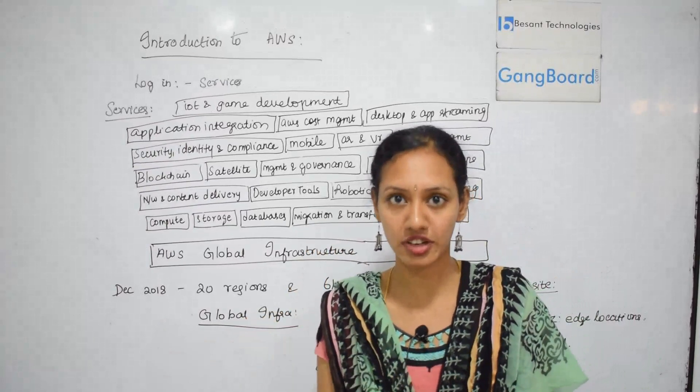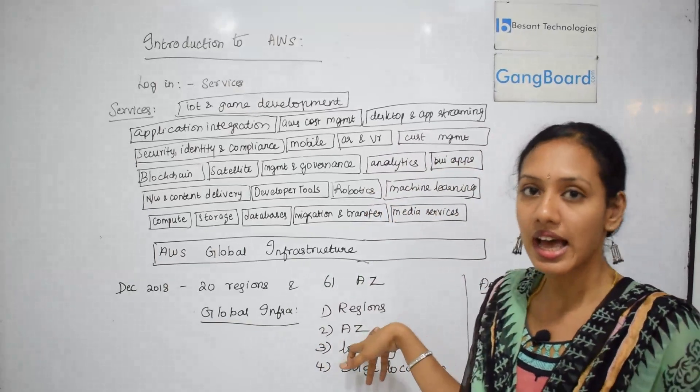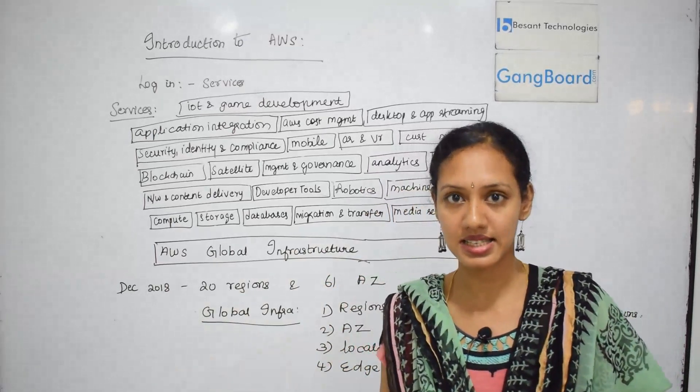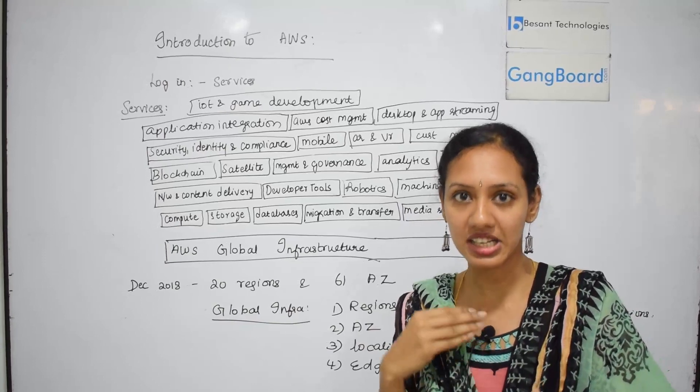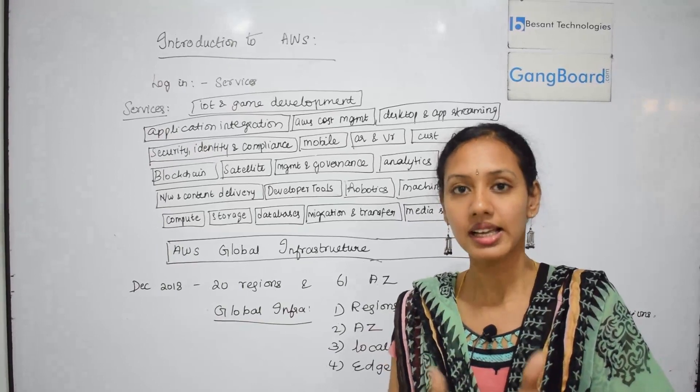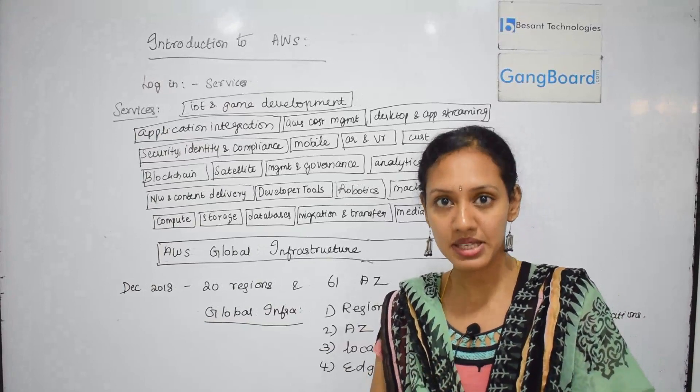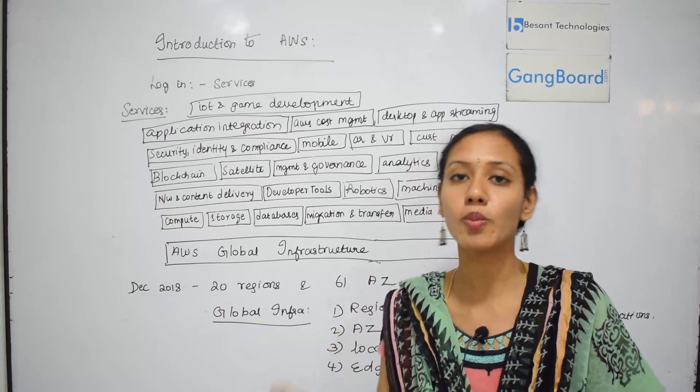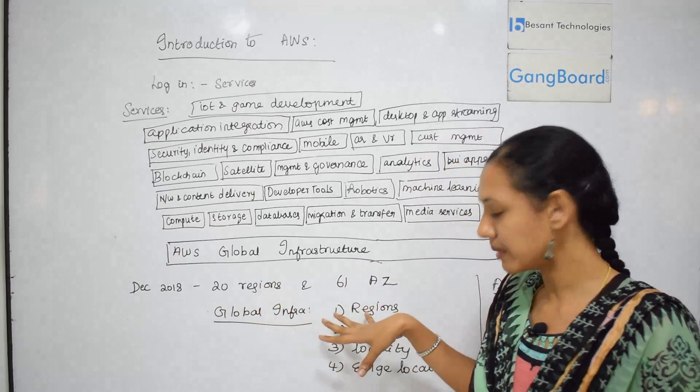Next comes availability zone. Just think of availability zone as a data center. If the data centers are really close to each other, they can be considered as a single availability zone. So an availability zone can be made up of one single data center or more than one data centers. Within a region, we will be having many availability zones.